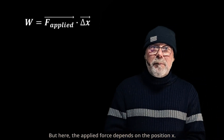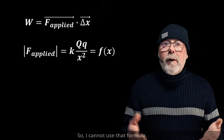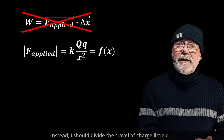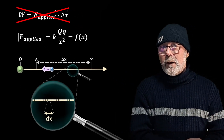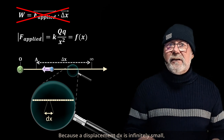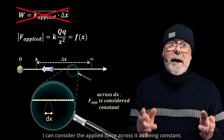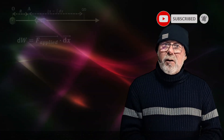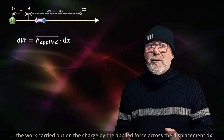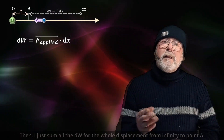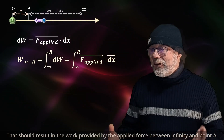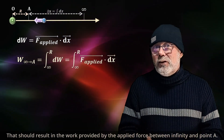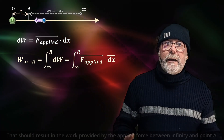But here, the applied force depends on the position x, so I cannot use that formula. Instead, I should divide the travel of charge little q into infinitely small displacements dx. Because a displacement dx is infinitely small, I can consider the applied force across it as being constant. This allows me to calculate dw — the work carried out on the charge by the applied force during the displacement dx. Then I just sum all the dws for the whole displacement from infinity to point A. That should result in the work provided by the applied force between infinity and point A — it's an integral.